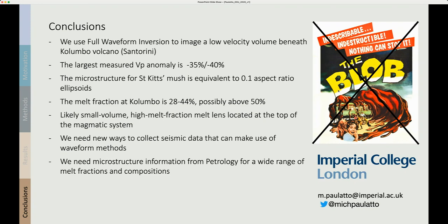So our conclusions are that we can use full waveform inversion to image low velocities and to improve the resolution. We've used this to image a rather small low velocity volume in the Columbo volcano. It has the largest measured Vp anomaly of minus 35 to minus 40 percent, and this is really substantial. We've then looked at the microstructure of crystal mush using a sample from St. Kitts, showing that it has an equivalent aspect ratio of 0.1, and this allows us to narrow down the range of possible aspect ratios and make a prediction for the melt fraction of Columbo of between 28 and 44 percent. It could possibly be above 50 percent. So this is likely a small volume high melt fraction melt lens at the top of a magmatic system.